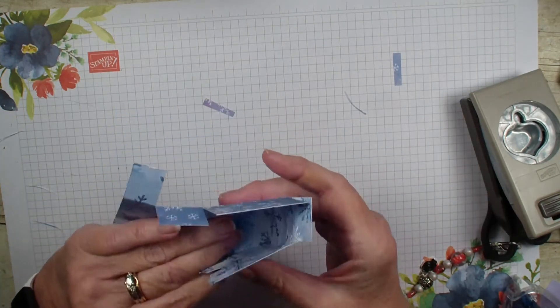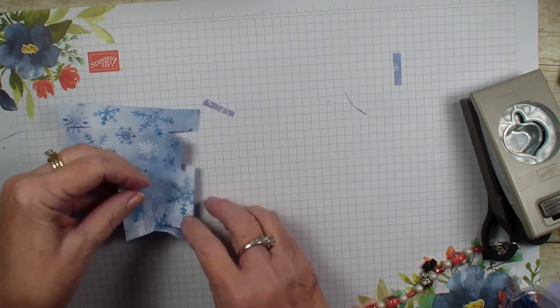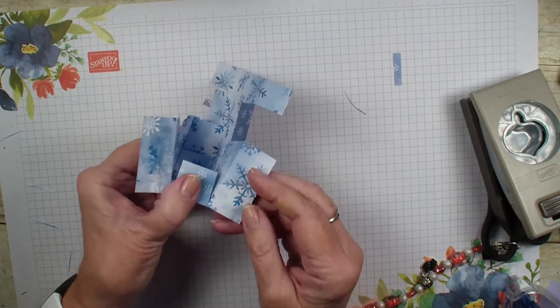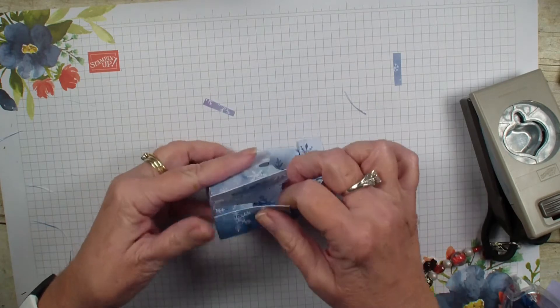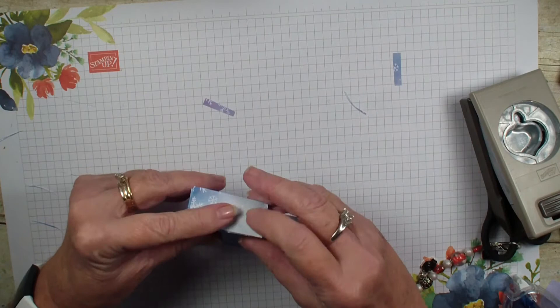We will do the other side, again, flap in, flap over, taped side to close my box.